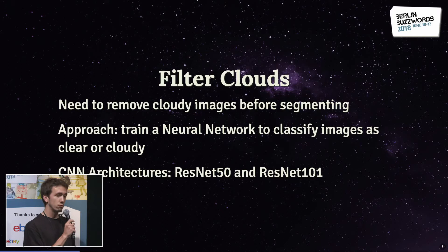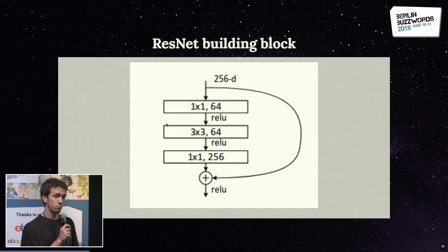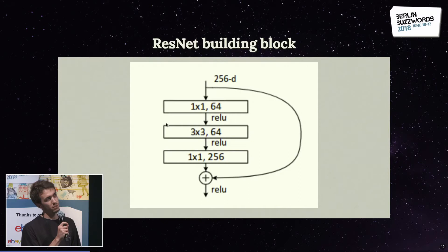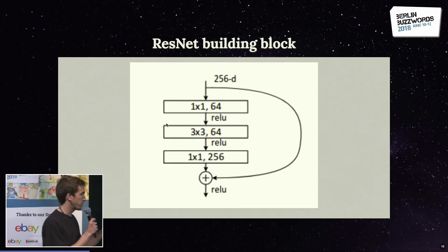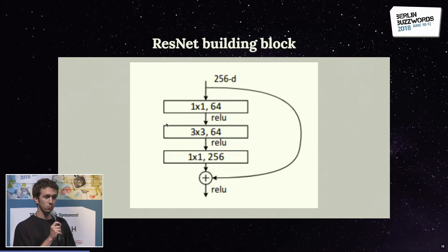To filter these clouds, we're going to train a neural network to classify images as clear or cloudy. For that we'll use ResNet-50 and ResNet-101, which are among the best networks for computer vision problems. They also tend to support transfer learning better, which will be useful here. The most interesting part of the ResNet architecture is the identity mapping connection, which allows ResNets to be deeper than other networks — ResNet-50 has 50 layers, ResNet-101 has 100 layers.